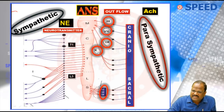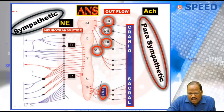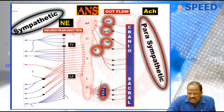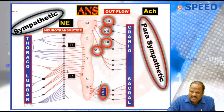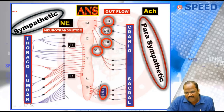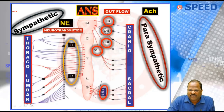So, the outflow of parasympathetic is called craniosacral outflow. Similarly, when you come to sympathetic, the outflow of sympathetic comes from the thorax and also from the lumbar region. Since it comes from the thorax and lumbar, I am going to call this output thoracolumbar in nature. The outflow of sympathetic is called thoracolumbar, specifically coming from T1 to L3.